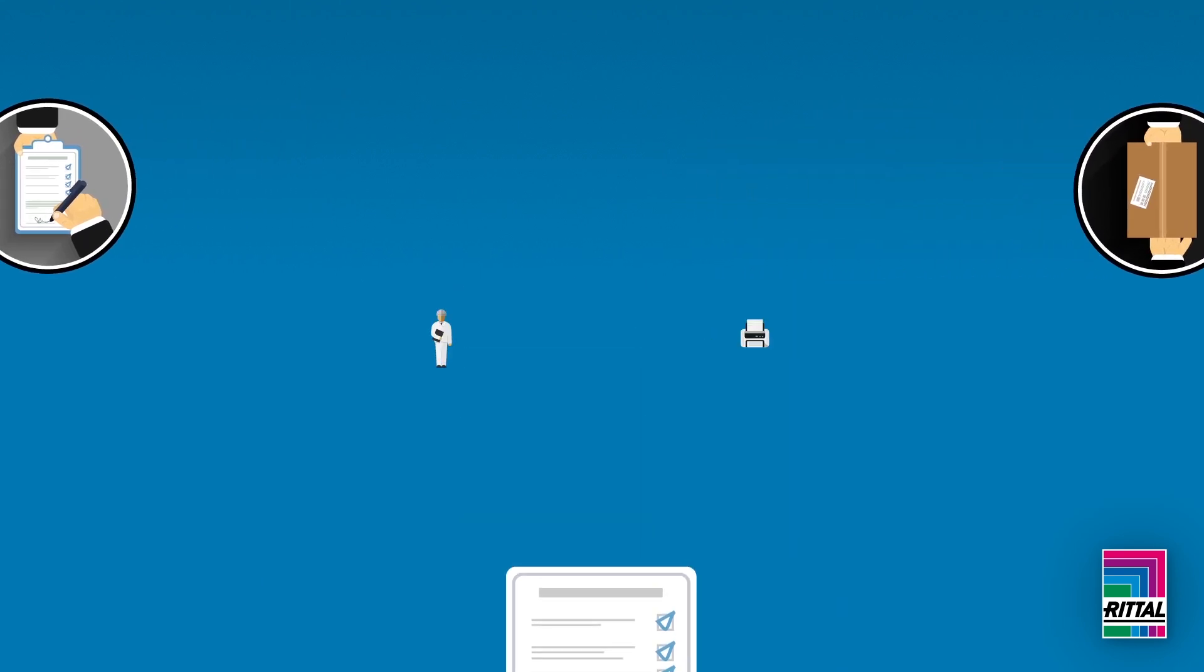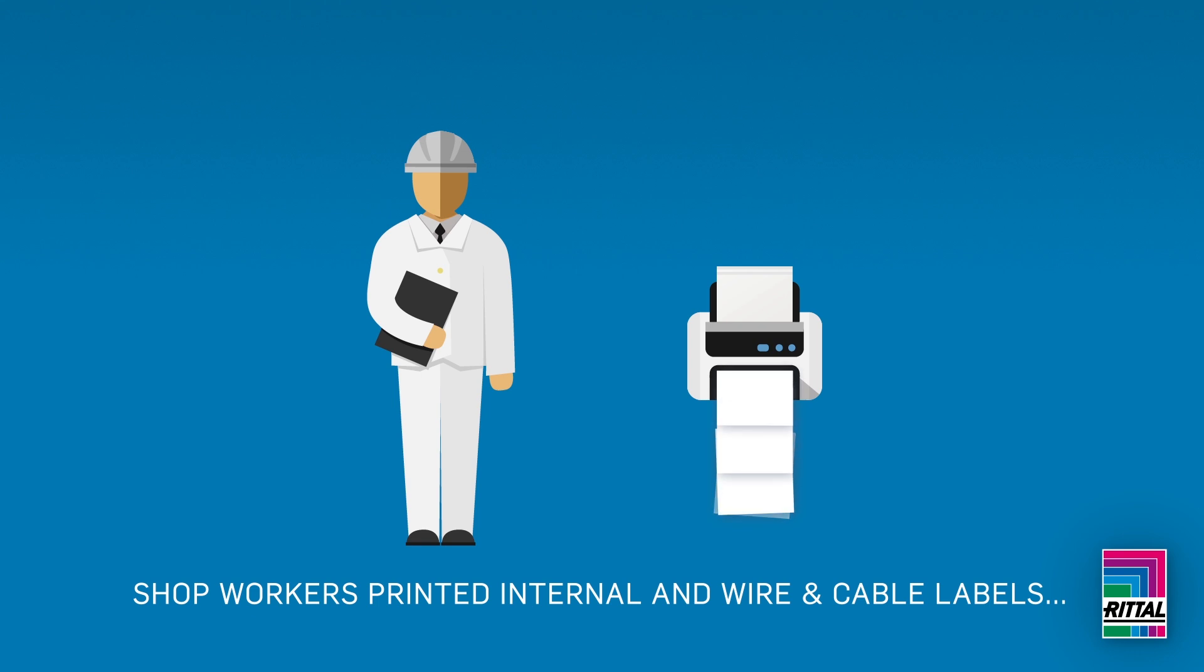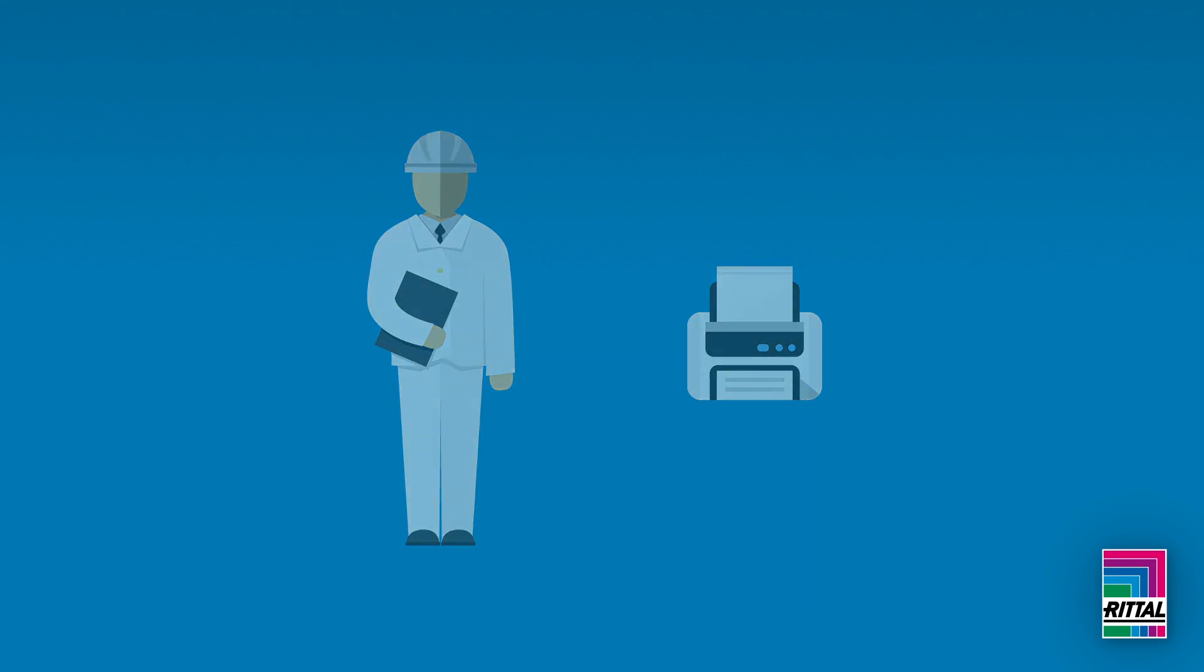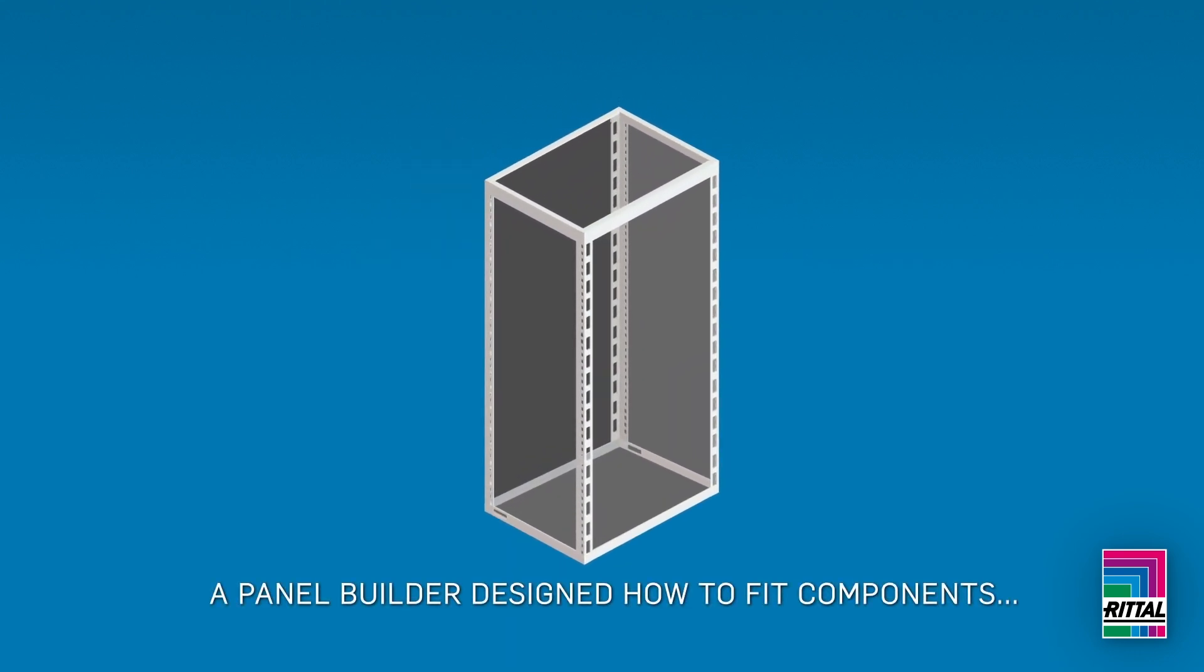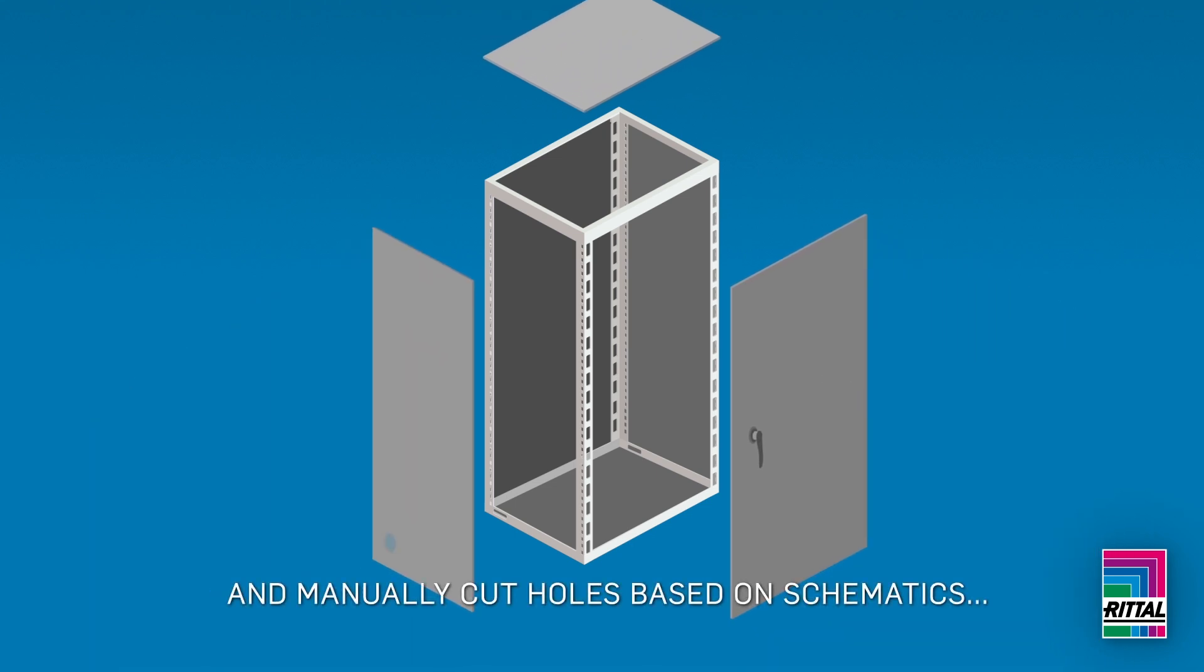Shop workers printed all necessary internal and wire and cable labels according to end customer specs. A panel builder or electrician identified the devices required, designed how to fit components in the smallest enclosure possible, and manually cut holes based on schematics.